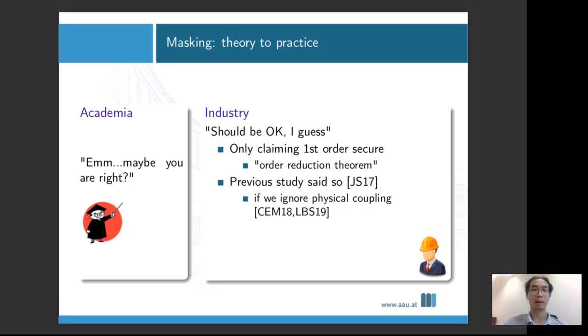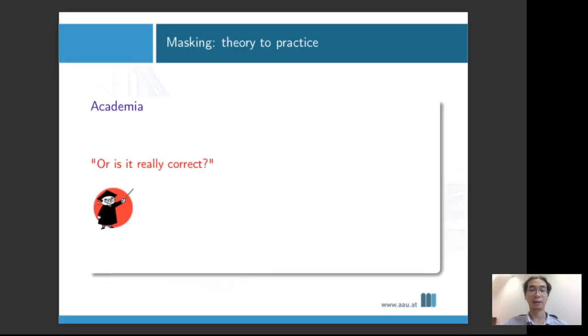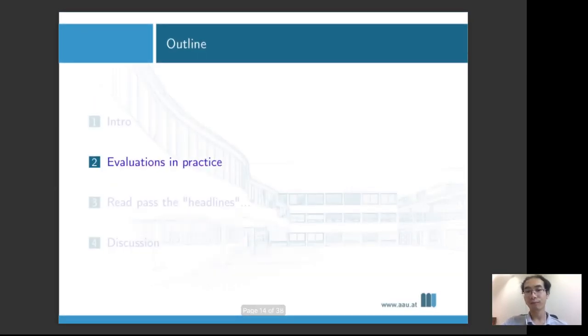The engineer says, it should be okay. I'm using full share schemes but only claiming first order secure. Although that's quite limited, according to the order reduction theory, that should be fine. Also, previous study suggests transition in software environment is not such a big deal. It's not really devastating if we can ignore the physical coupling effects. The researcher says, maybe you're right, but it might be difficult to actually talk about whether these statements are completely correct. But it's relatively easy to evaluate the security of that specific implementation in practice as we already have the code. Let's start with that.